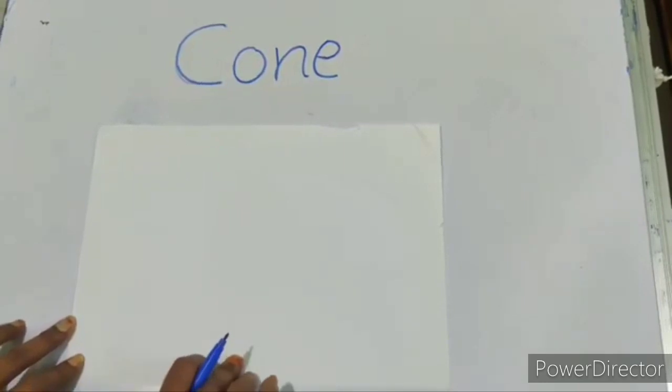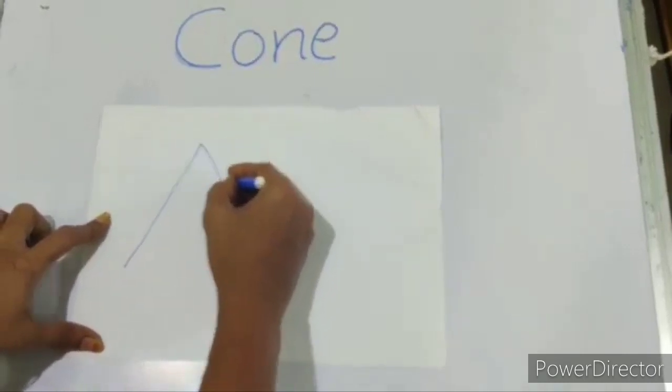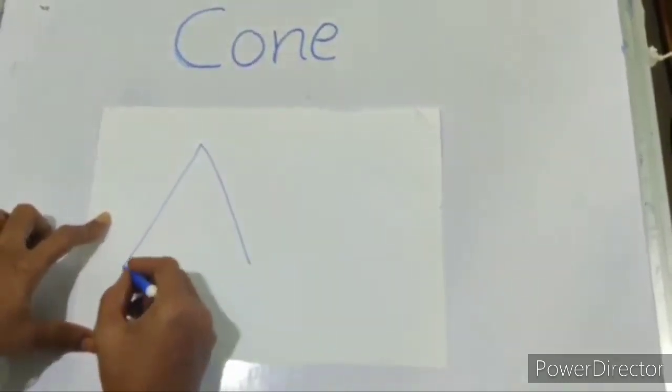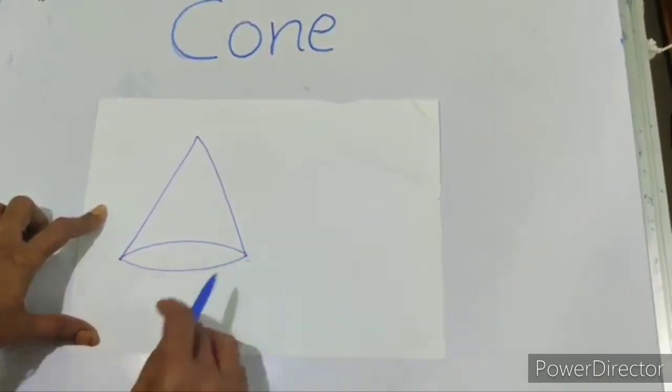Let us learn how to draw the cone. First draw the two slanting lines like this. Then draw the oval like this. You got a cone.